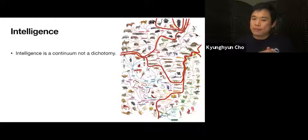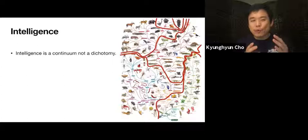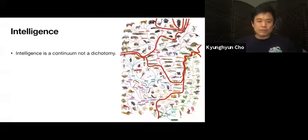But then how about plants? Are plants intelligent? Probably not. Or maybe? You notice that it becomes quite confusing what it means for some things — not only biological things, but some things — to be intelligent.